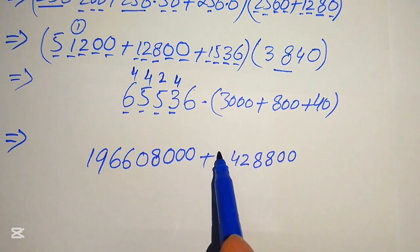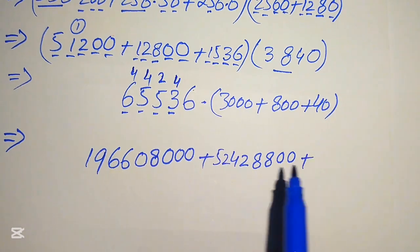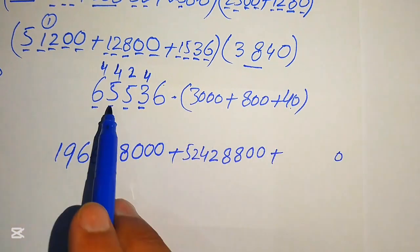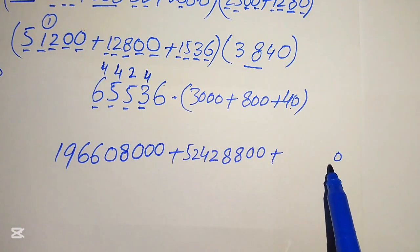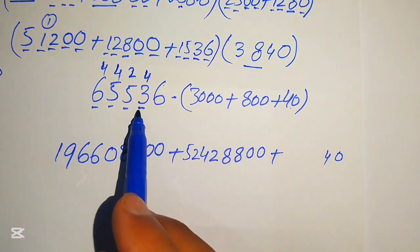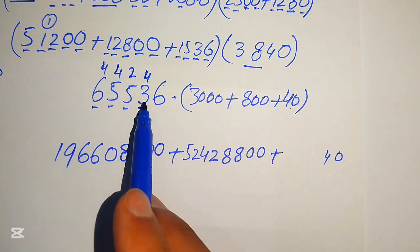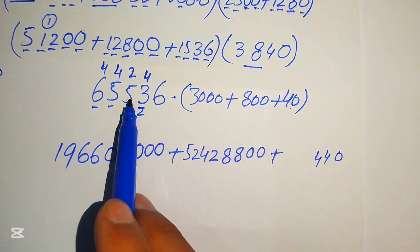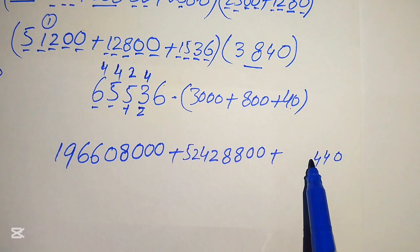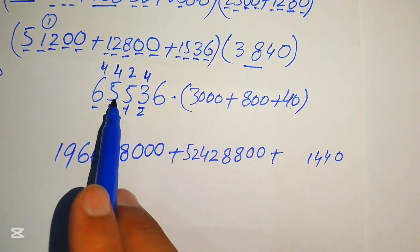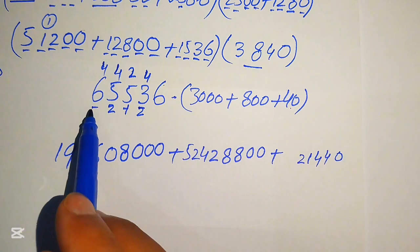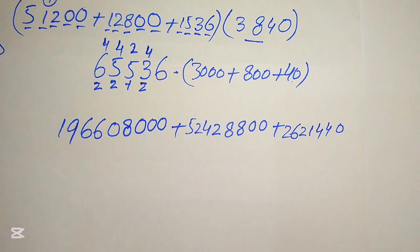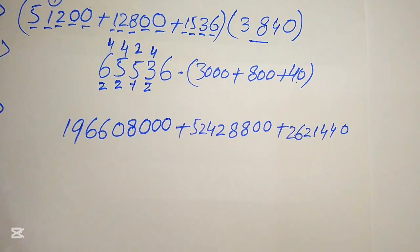For 65,536 times 40, we write one zero and multiply by 4: 4 times 6 is 24, write 4 carry 2; 4 times 3 is 12, plus 2 is 14, write 4 carry 1; 4 times 5 is 20, plus 1 is 21, write 1 carry 2; 4 times 5 is 20, plus 2 is 22, write 2 carry 2; 4 times 6 is 24, plus 2 is 26.